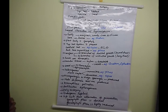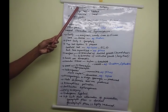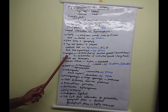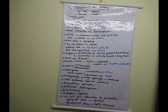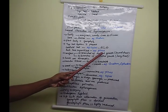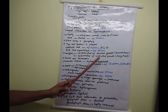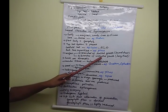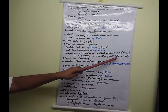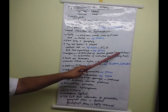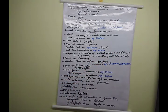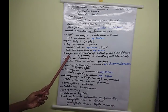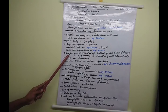Conifers are one of the classes of gymnosperms. They produce two types of branches: branches with limited growth and branches with unlimited growth. Unlimited growth means a long shoot is present; limited growth means a dwarf shoot is present. These are the two types of branches in the gymnosperm class Coniferopsida.